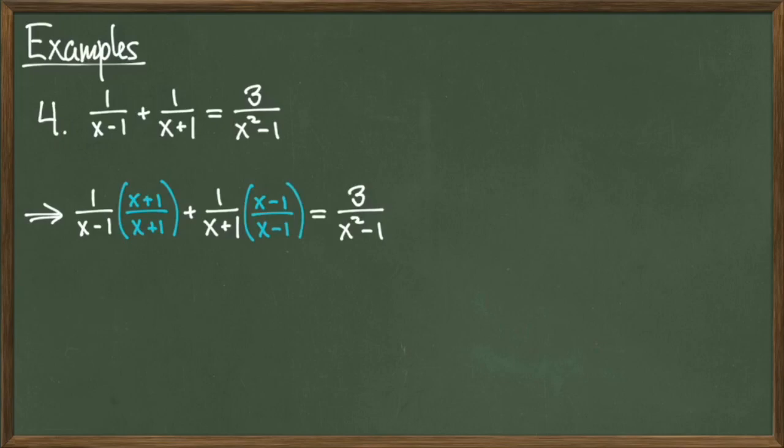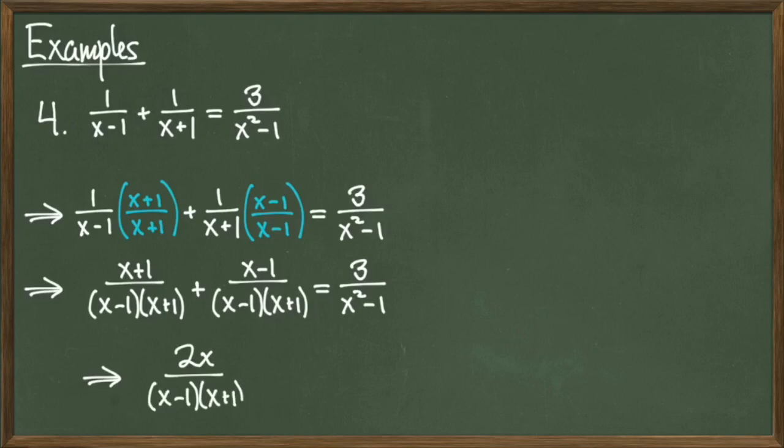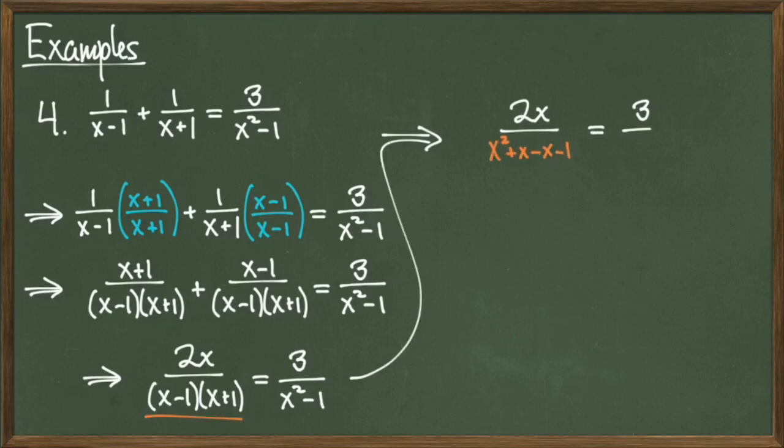So I'll add the fractions on the left-hand side together in the following way. Multiplying by these quantities will give us a common denominator. The left-hand side will simplify to 2x over x minus 1 times x plus 1. The math that is happening on the left-hand side is completely dependent on how we find common denominators for fractions. We can take this simplification a step further by foiling out the denominator x minus 1 times x plus 1. Once we FOIL this out, we get the revised equation 2x over x squared plus x minus x minus 1 equals 3 over x squared minus 1. Simplify the left-hand denominator again to get the revised equation 2x over x squared minus 1 equals 3 over x squared minus 1.